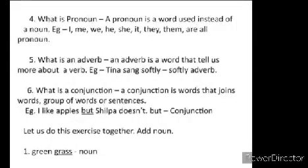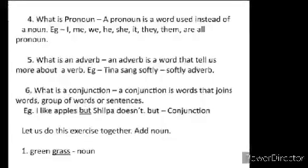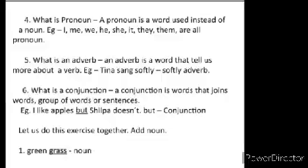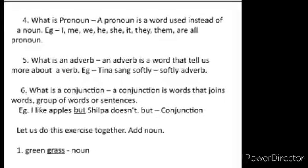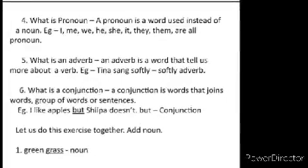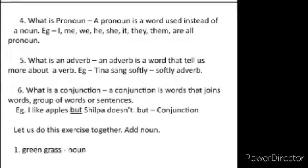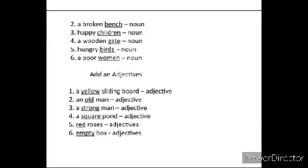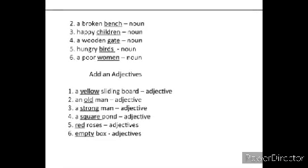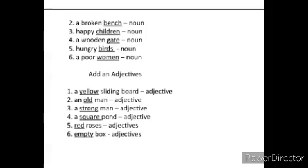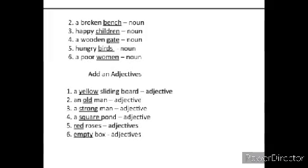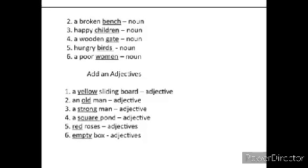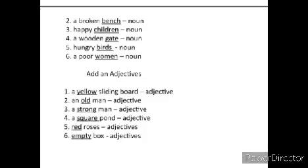Look at the picture, then fill in the blanks using the words given below. Let us do this exercise together. Add a noun. One: green grass – grass is the noun. A broken bench – bench is the noun. Happy children – children is the noun. A wooden gate – gate is the noun. Hungry birds – birds is the noun. A poor woman – woman is the noun.